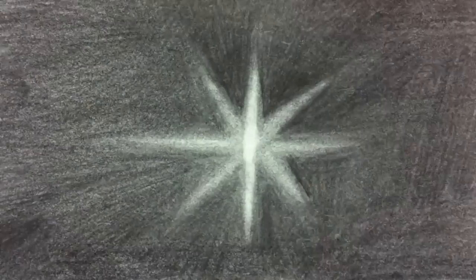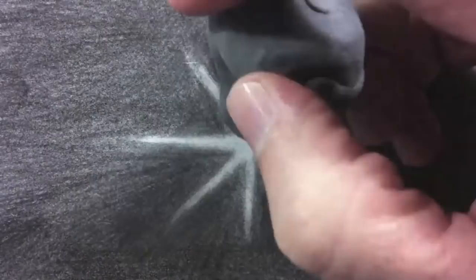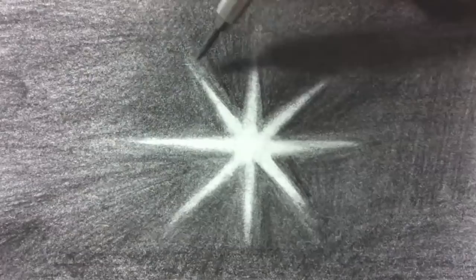I will smudge with the brush, and then pull the light again with the eraser. Very well, now she is bright and shiny.